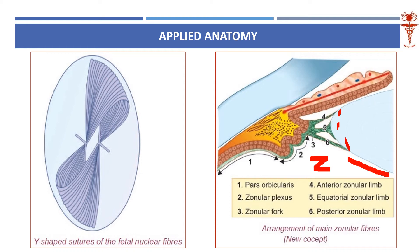The lens fibers as arranged in the cortex, epinucleus, and nucleus form a peculiar pattern which creates Y-shaped sutures. You can see these Y-shaped sutures formed in the lens. These Y-shaped sutures can become cataractous, forming a variety called sutural cataract, which we will discuss under congenital cataracts. This is the anatomical basis of that sutural cataract.